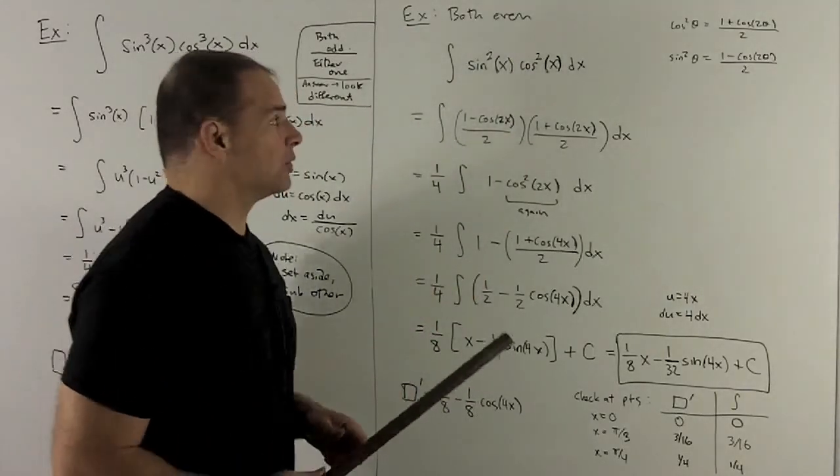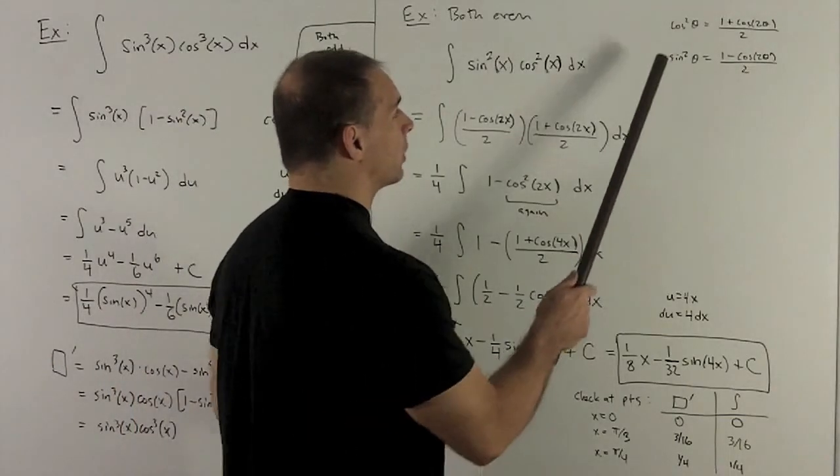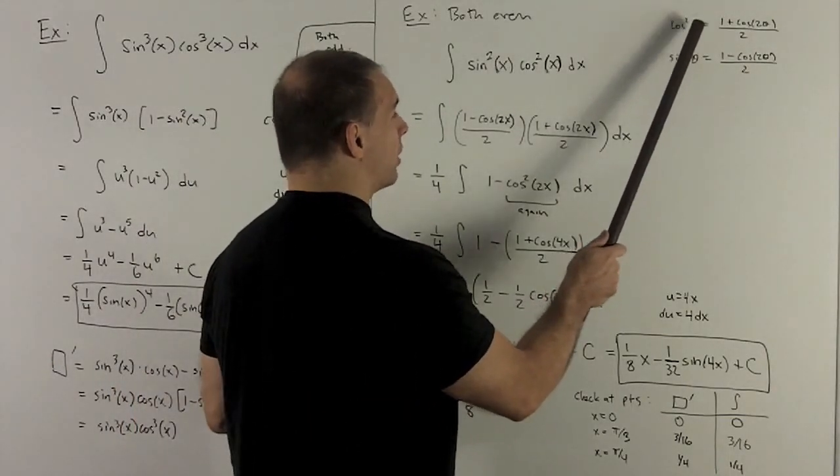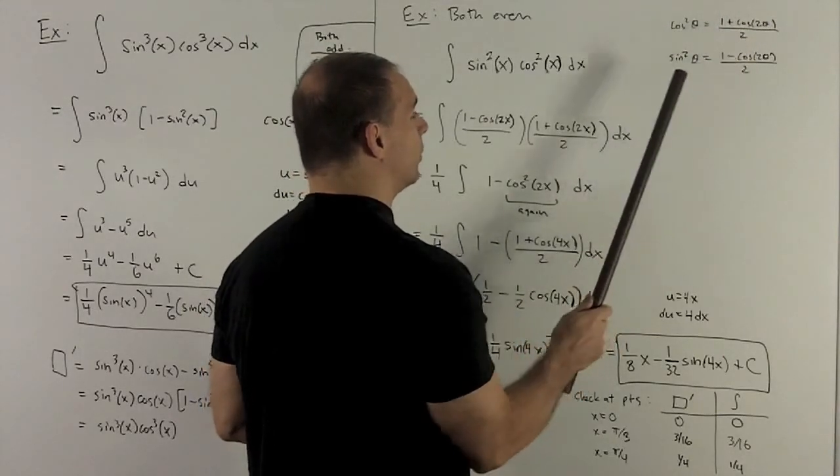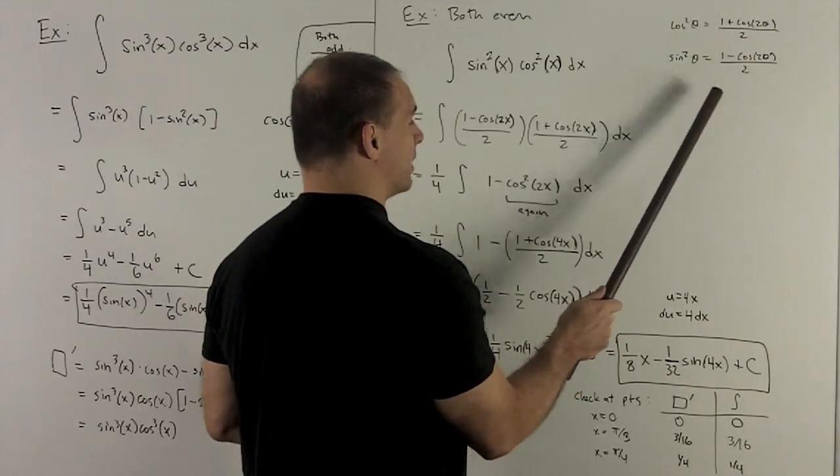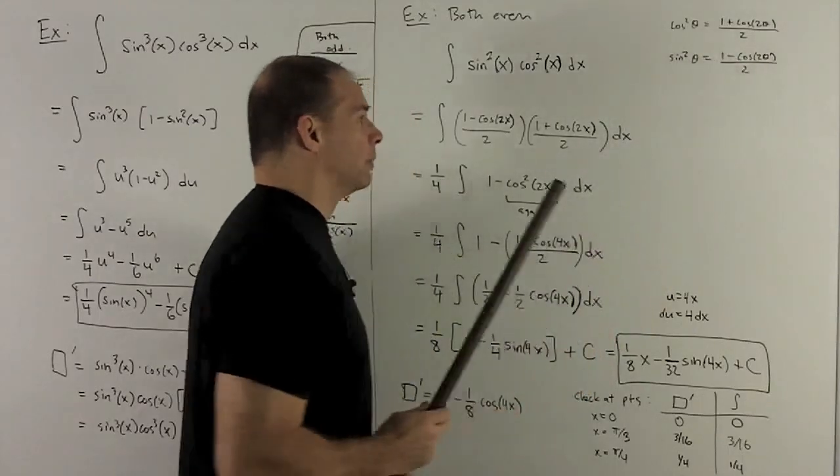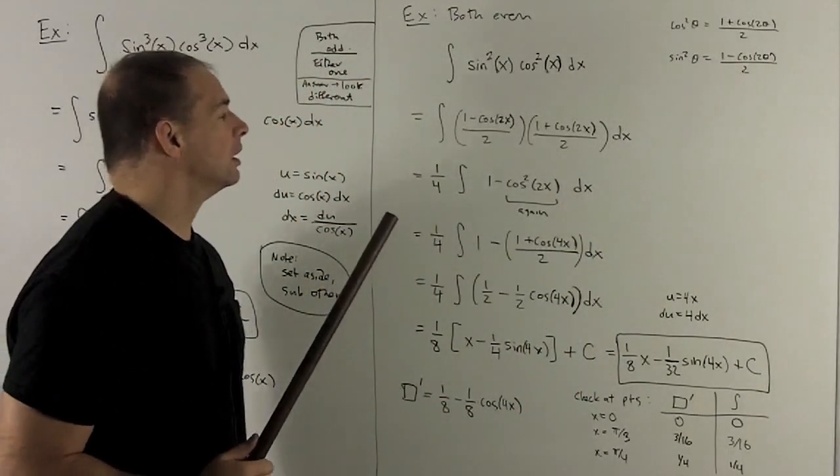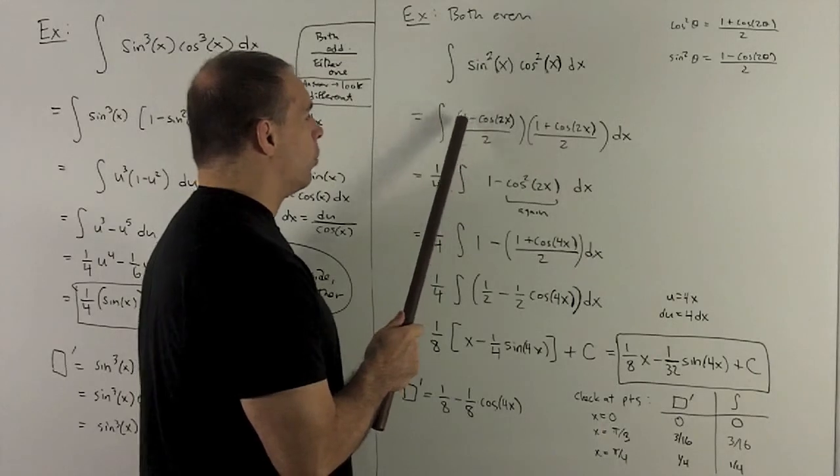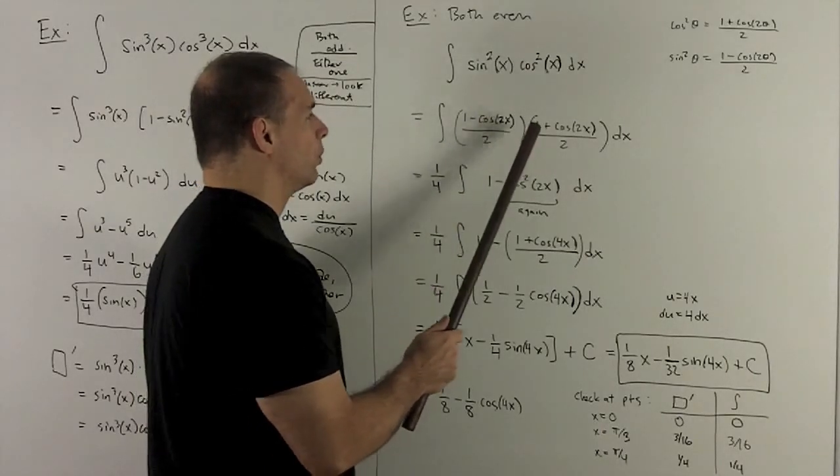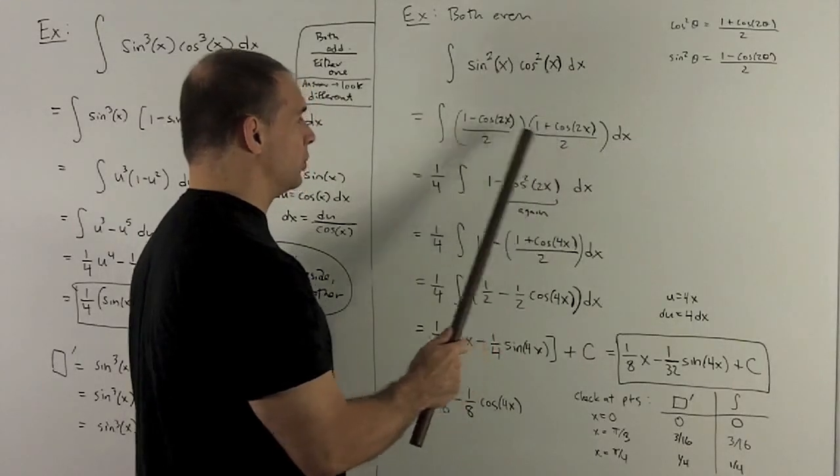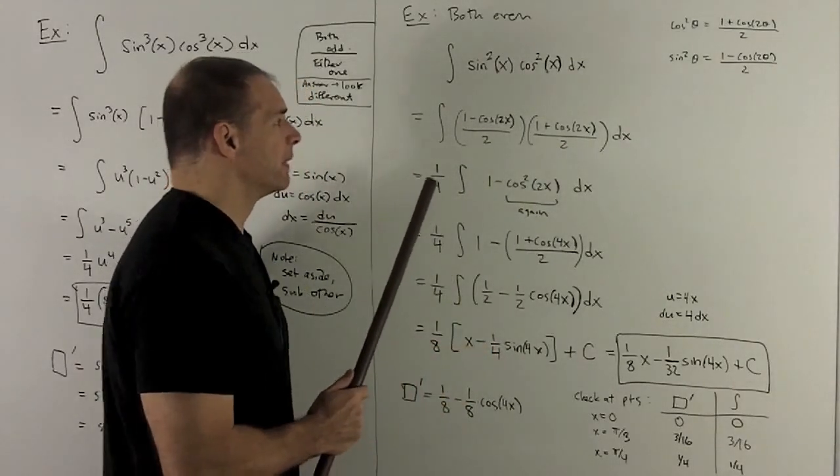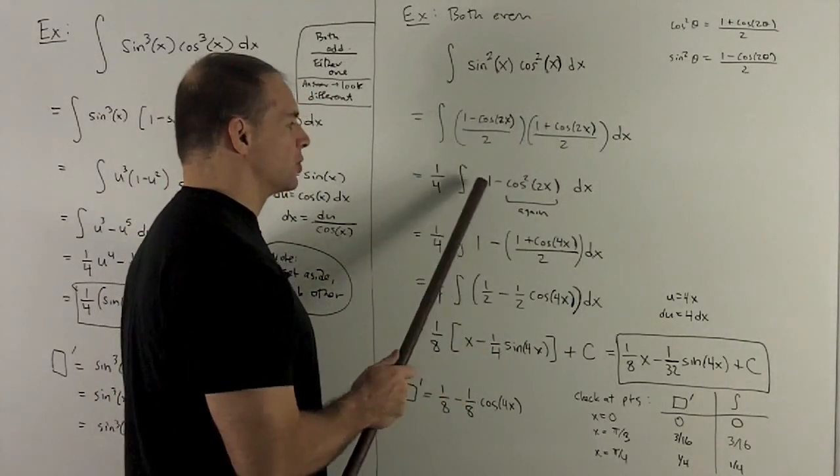So my procedure is I'm going to use the half-angle identities, which say cosine squared of your angle is going to equal 1 plus cos double the angle over 2. And for sine, it's going to be the same, but with a minus sign before the cosine 2 theta. So here I sub in, and I'm going to get 1 minus cosine 2x over 2, 1 plus cosine 2x over 2. And then I can pull out the 2s to give me a fourth in front. And then what I'm left with is a difference of two squares.